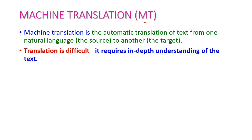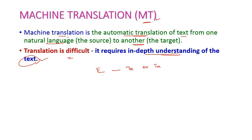Machine Translation, which is otherwise called as MT. What is Machine Translation? It is an automatic translation of text from one natural language to another natural language. For example, translating content from English language to Telugu language or Tamil language. It is a very difficult process because it requires in-depth understanding of the text, as the grammar of Telugu or Tamil language is entirely different from the grammar of English language.